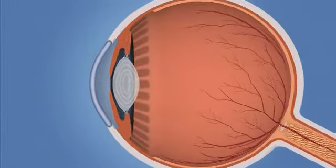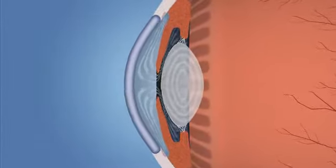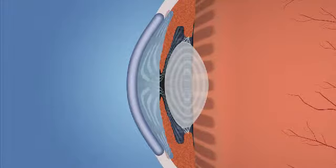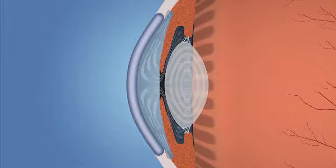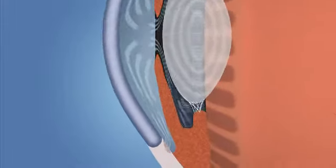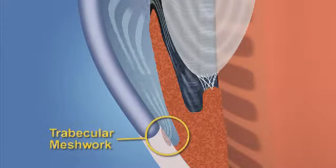In the healthy eye, a clear liquid called aqueous humor circulates inside the front portion of the eye. To maintain a constant healthy eye pressure, your eye continually produces a small amount of aqueous humor, and an equal amount of this fluid flows out of the eye through a microscopic drain called the trabecular meshwork.